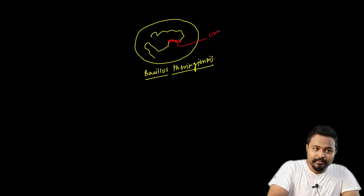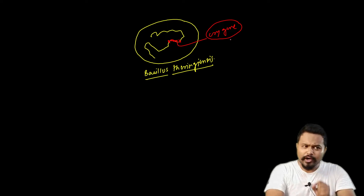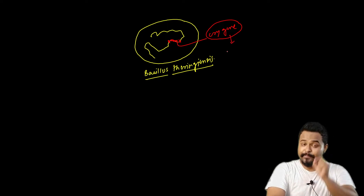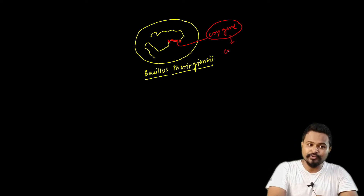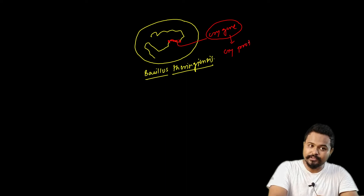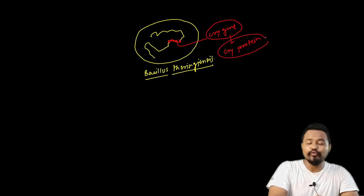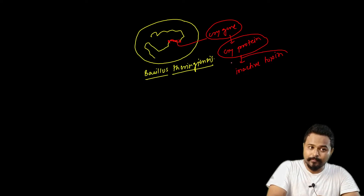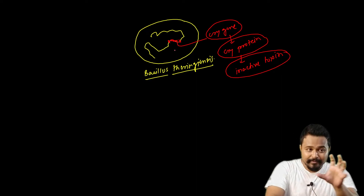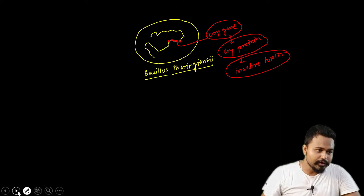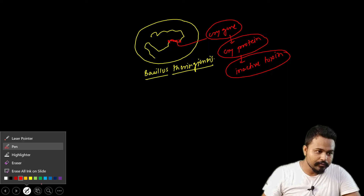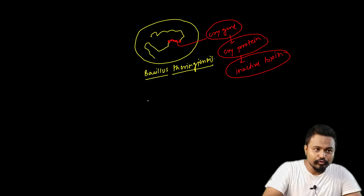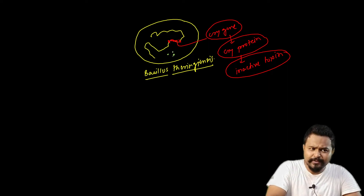The cry gene is very important. The cry gene produces an important protein — cry protein. Cry protein is actually in an inactive state inside the plant — it is an inactive toxin. So genetically, the cotton plant carries this inactive form of the toxin.